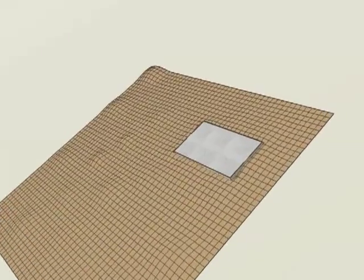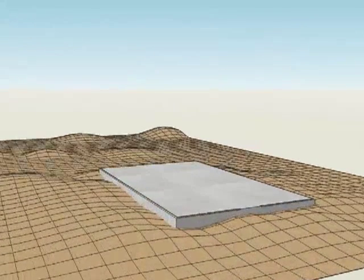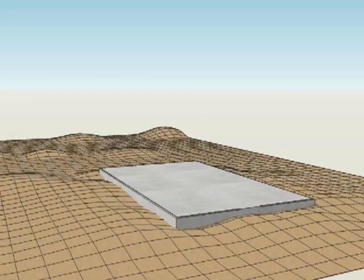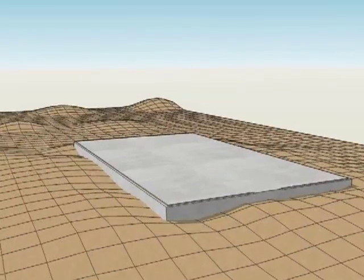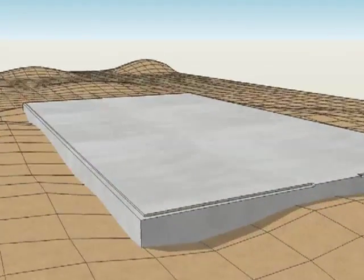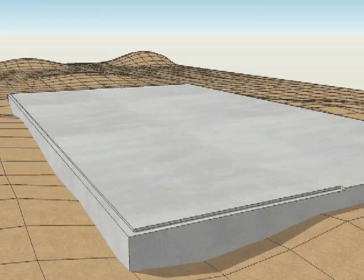First, the slab is prepared with a rebate 100mm by 35mm deep around the perimeter. This is used to accept the modules which have a step down on the outside so that it keys into the rebate around the slab.